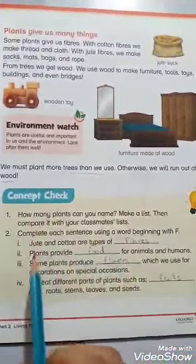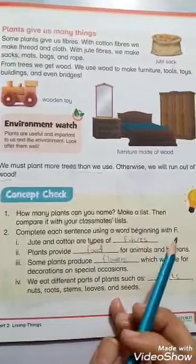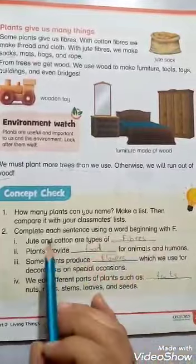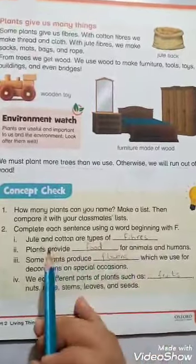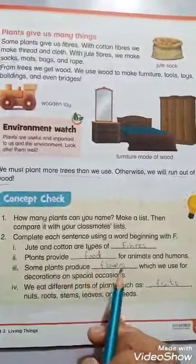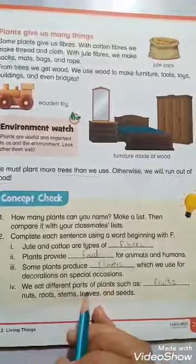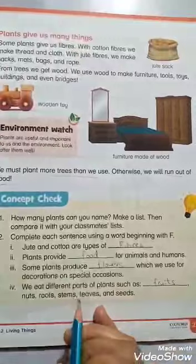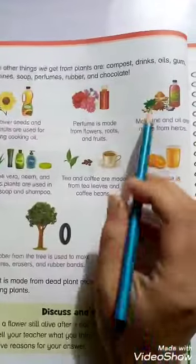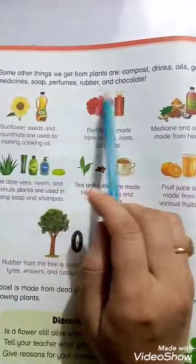Concept check: Complete each sentence using a word beginning with F. We have to fill the blanks beginning with F. Jute and cotton are types of fibers. Plants provide food for animals and humans. Some plants produce flowers which we use for decoration on special occasions. We eat different parts of plants such as fruits, nuts, roots, stems, leaves and seeds. Some other things we get from plants are compost, drinks, oils, gum, medicines, soap, perfumes, rubber and chocolate.